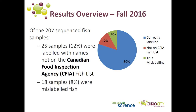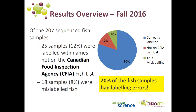Once the results were in, we learned that of the 207 sequenced fish samples, 43 were in fact mislabeled. Twenty-five samples were labeled with names that aren't supposed to be used in Canada, based on the Canadian Food Inspection Agency's fish list, while 18 samples were actually incorrectly labeled fish. These fish were sold under the wrong name, either accidentally or on purpose. That means that overall, approximately 20% of the fish samples had labeling errors of some kind.